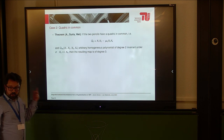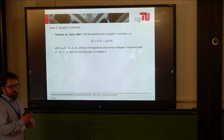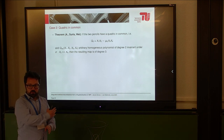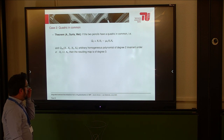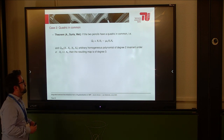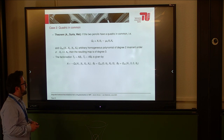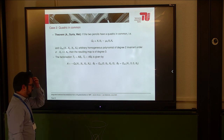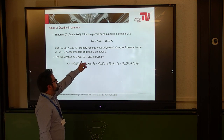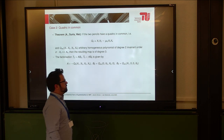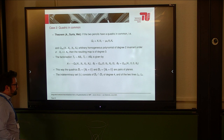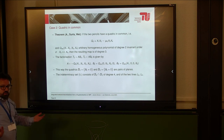Case two: the two pencils have one quadric in common — they brush the space but there's one moment they coincide. Then I can reshuffle things to get two pairs of planes, factorize T₀ and T₂, and again get a map of degree three. So in both cases I get a map of degree three. The maps are a bit different, and there's some intersection between the cases.